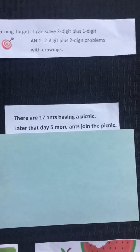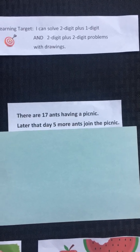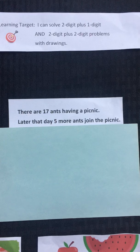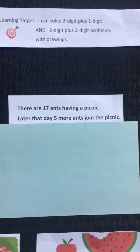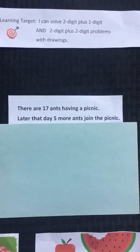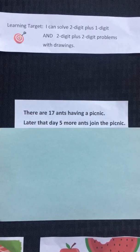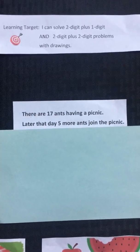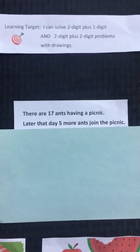In the three read strategy, I would want to look at this problem the first time and think, what is this problem about? Well, it's about ants having a picnic. The next read, I would want to pay attention to the numbers or quantities involved. There are 17 ants and five more.